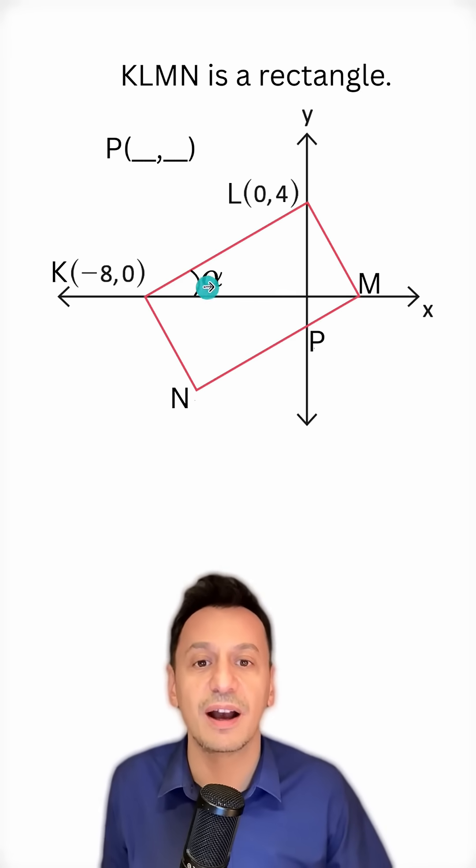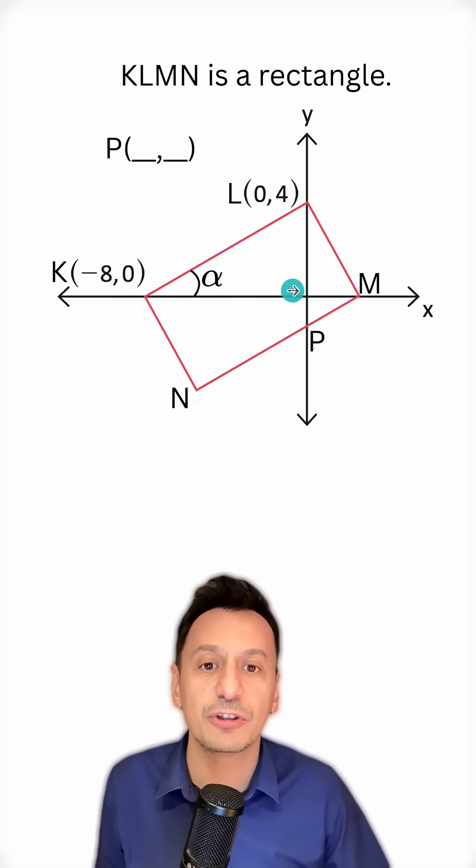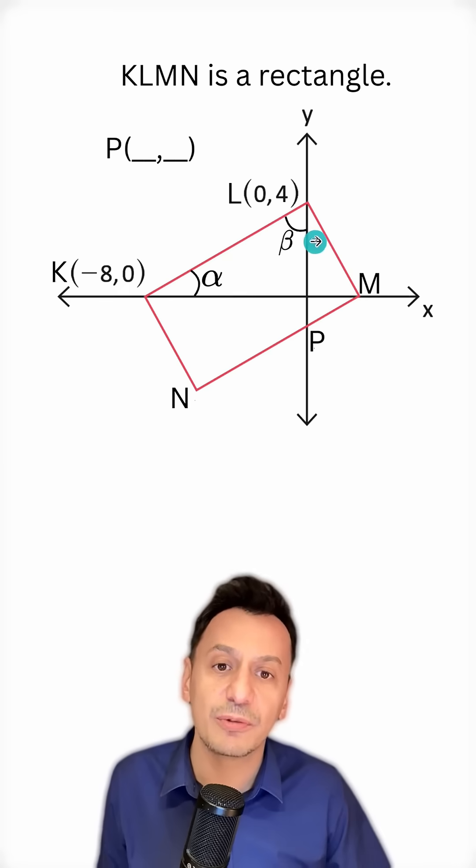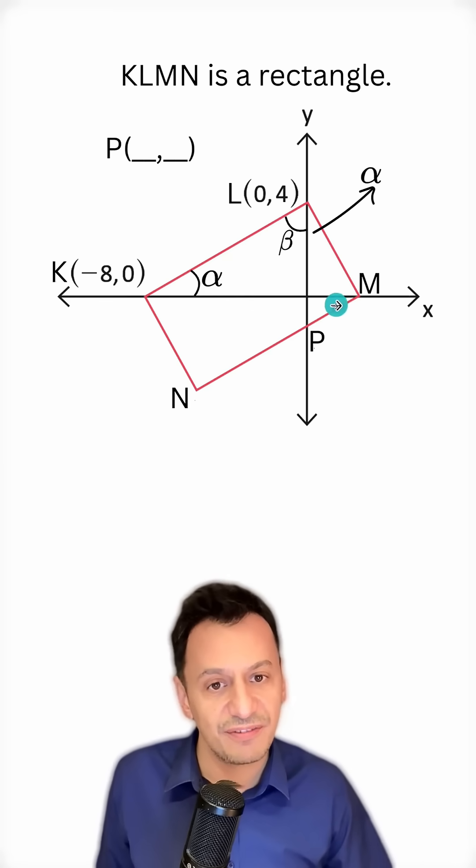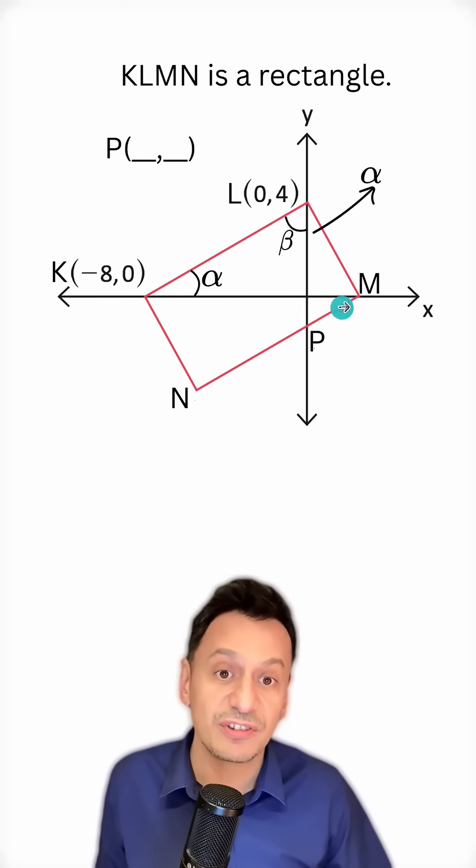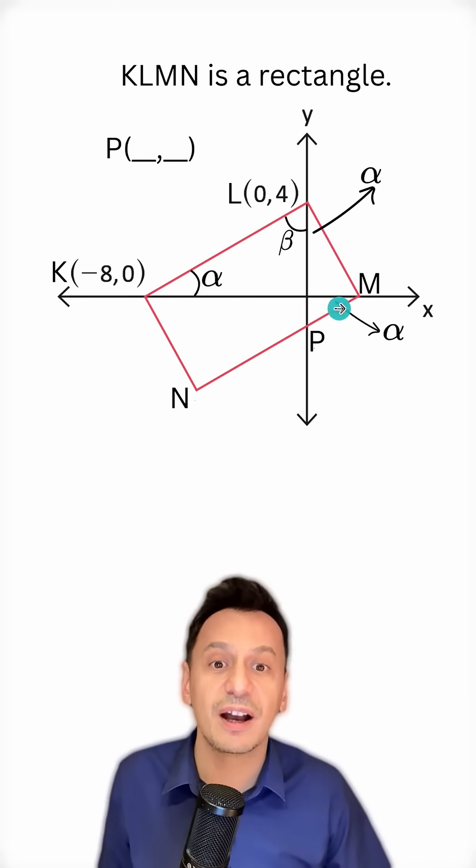First let's call the angle here alpha. Since this is 90 degrees, this angle right here is going to be the complement of alpha. Let's write it down. Beta angle. Now since this is also 90 degrees I can write the complement of beta right here, I mean alpha. Since this angle here and this acute angle here are alternate interior angles, I can call this the alpha angle.